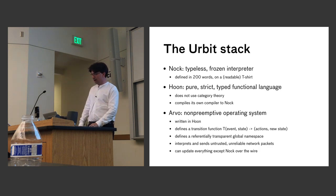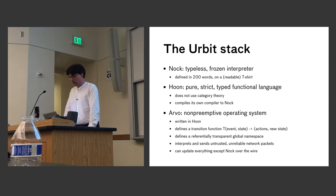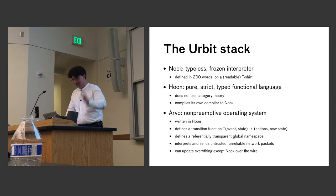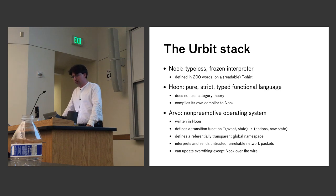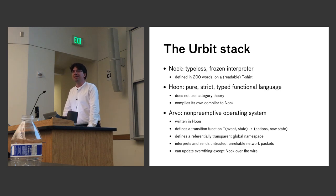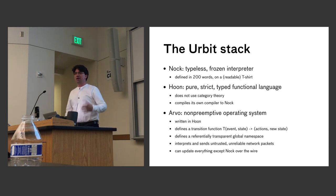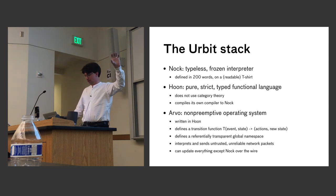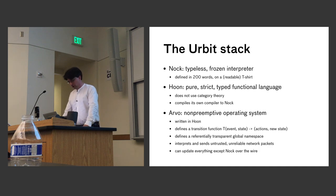The bottom of the stack is Nock — a typeless, non-lambda combinator interpreter defined in 200 words that fits on a T-shirt. On top of that is Hoon, a pure strict typed functional language that compiles itself to Nock. This is typed functional programming without category theory. If you have a compiler that compiles itself to Nock, you can bootstrap off of this basic bootloader. On top of that is Arvo, a non-preemptive OS. I'll give a lightning tour through all three systems.